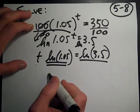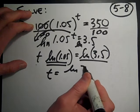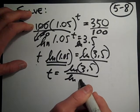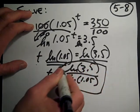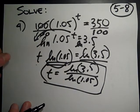So there's t. All I need to do is divide. So t is equal to the ln of 3.5 divided by the ln of 1.05. And you can do that on your calculator. You don't need me. Type that in. Ln of 3.5 divided by ln of 1.05.